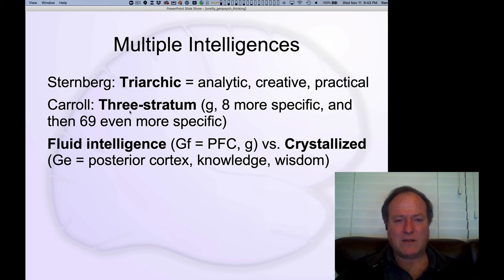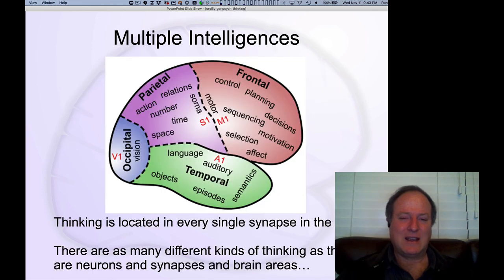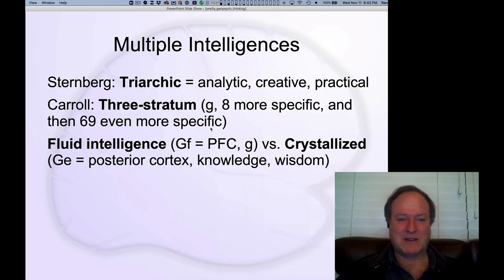Carol has a three stratum kind of level with G, and then eight more specific versions of that, and then 69 different categories that are even more specific, different subsets of intelligence. And that really starts to get into this kind of very large number of different kinds of abilities.